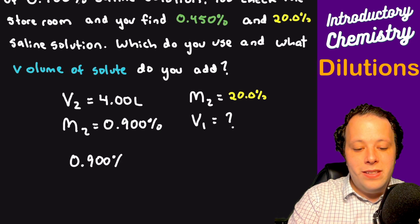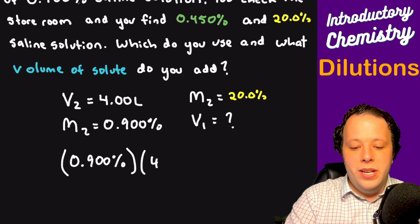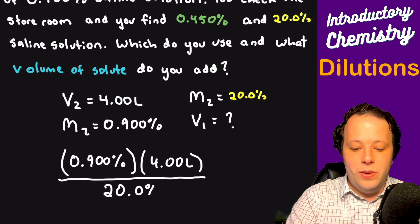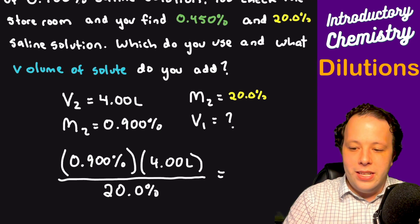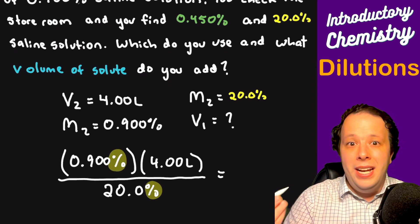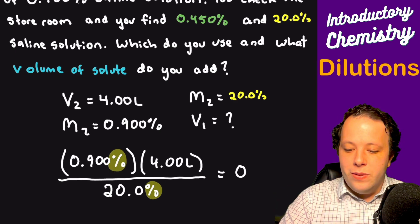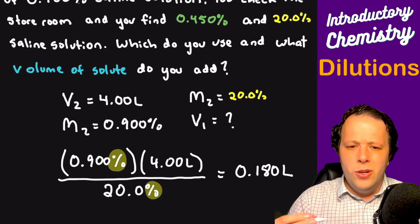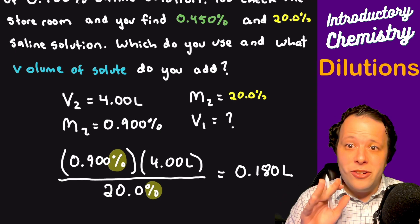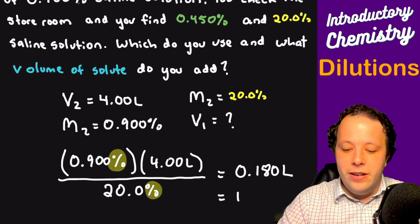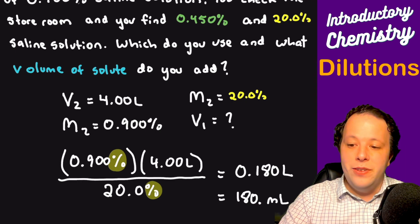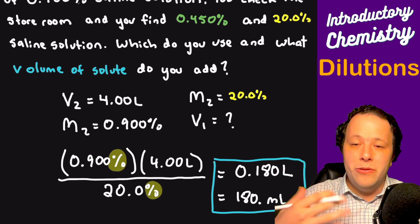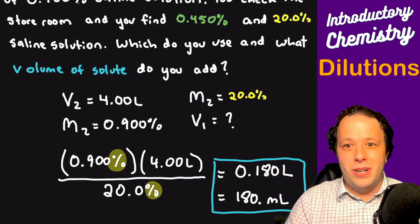Being that they're percents, the beauty of this is they'll cancel each other out when we're solving. We'll have 0.9% times four divided by 20%, and you can see the percents will cancel. This will give you 0.180 liters, which to put that in normal speak—there's nothing that measures just liters in the lab—this would be about 180 milliliters of your solute. You would fill it up to four liters of your vessel to make the rest of the solution.